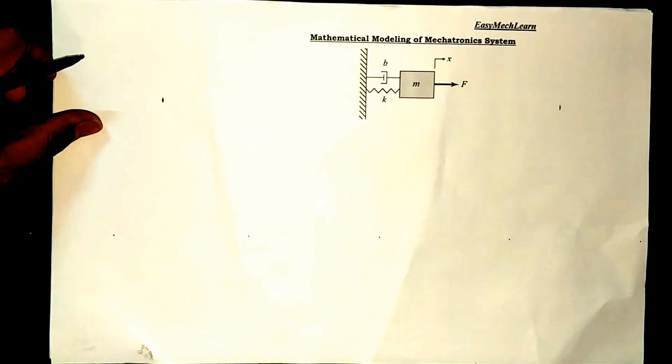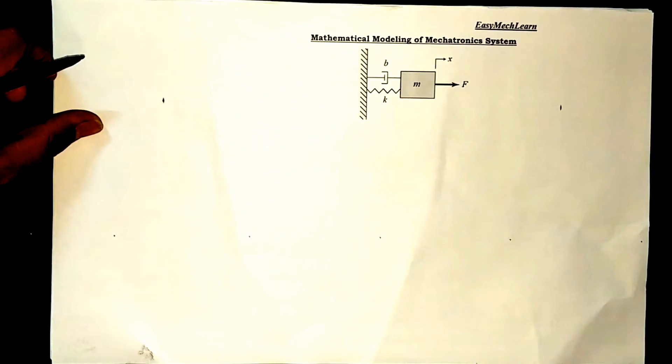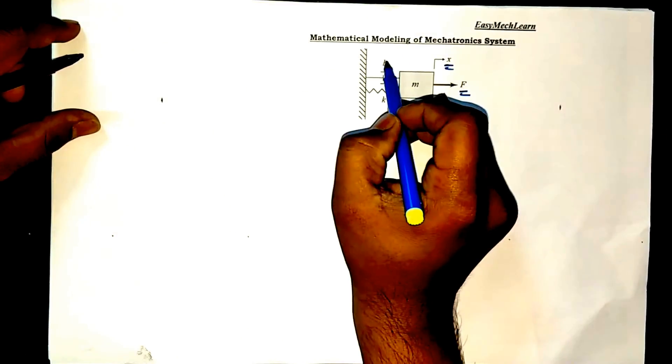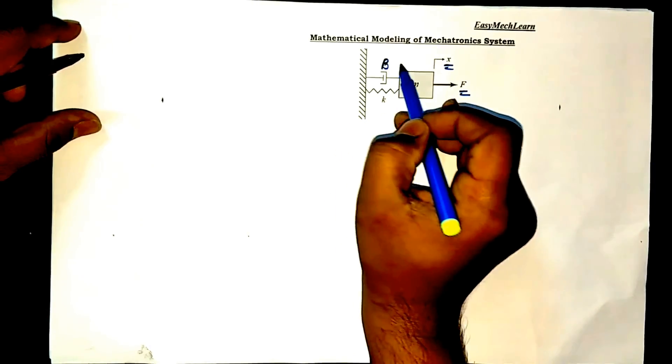Let us take one numerical which consists of mass. That mass is connected to damper and spring. The end of damper and spring is fixed. Given numerical is for a translational motion. F is a force acting on a mass, X is a displacement, B is a damping coefficient, K is a stiffness of a spring, and M is mass having magnitude.